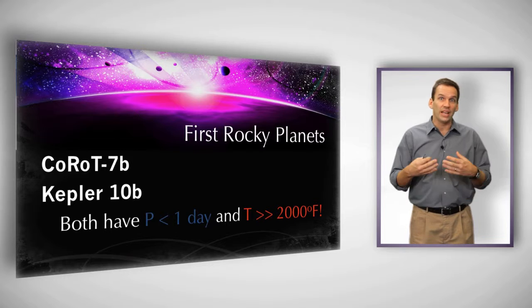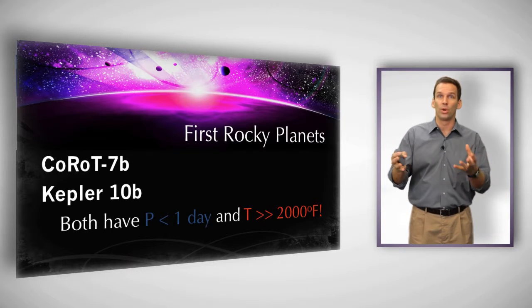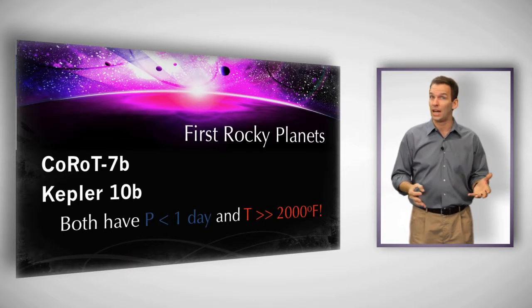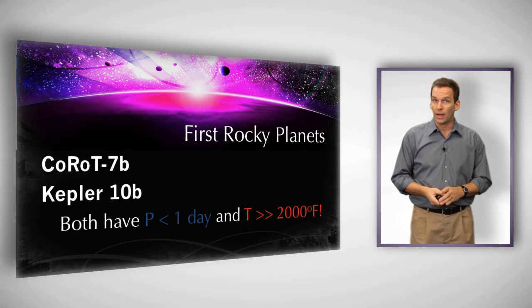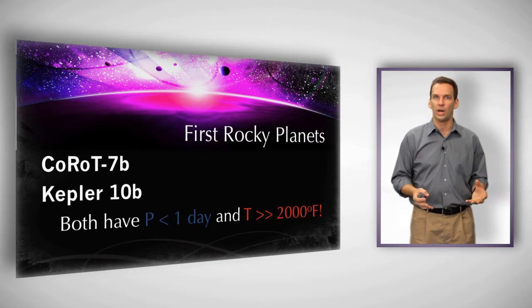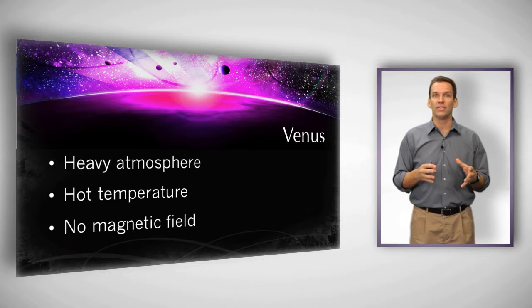When we study Venus and Mars in particular, those are two planets that are kind of on the borderline of the habitable zone around the sun, we see some interesting results. We find that both of these planets started out with an abundance of water. Mars almost certainly was covered in liquid water early in its history. Venus has a great deal of water but it's always had a pretty high temperature.